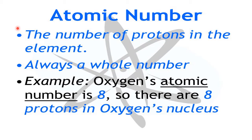To maintain electrical neutrality, equal numbers of positive and negative charges must be present. Therefore, in every atom under normal conditions, the number of electrons equals the number of protons. This number is called the atomic number. However, electrons are always busy in chemical reactions — giving, taking, or sharing — so their numbers keep changing.